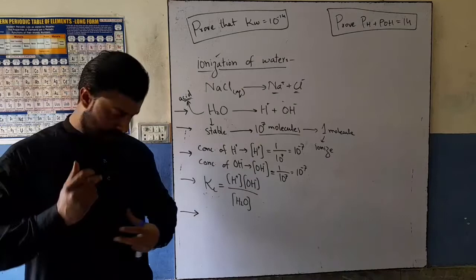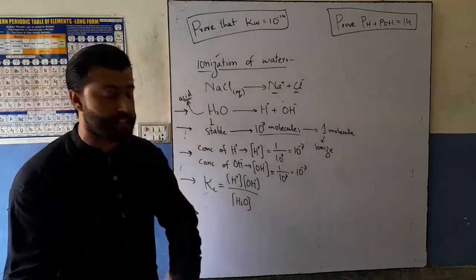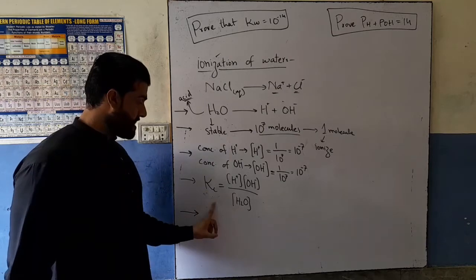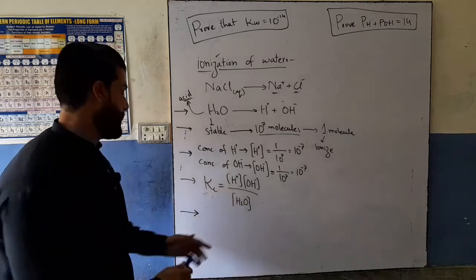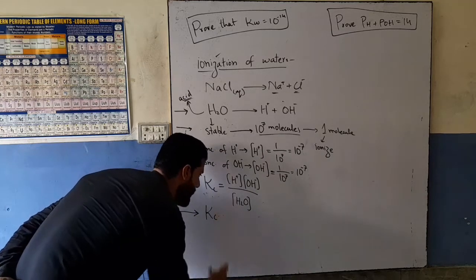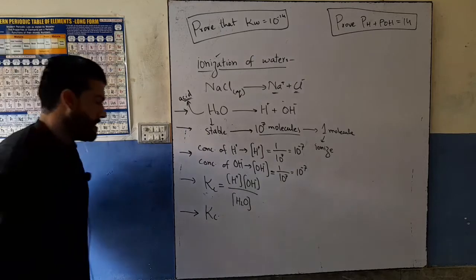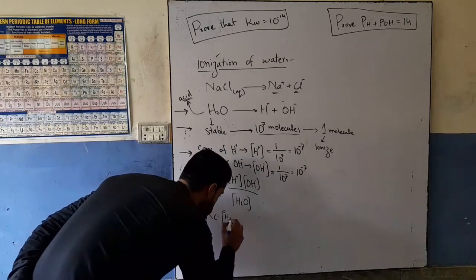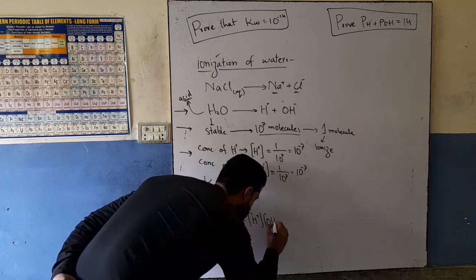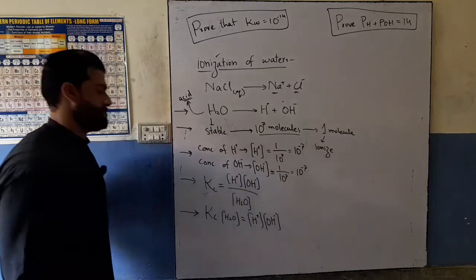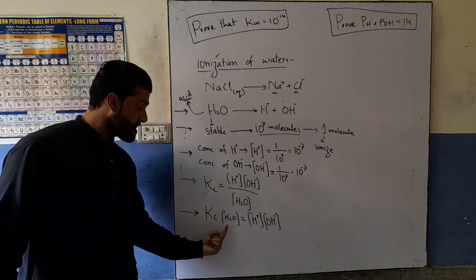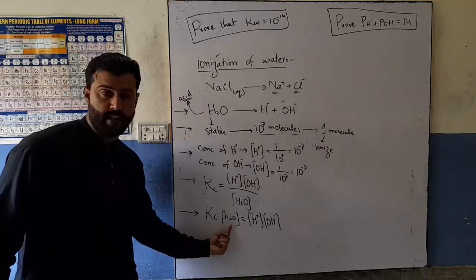The water concentration is constant, so it is moved to the other side with the equilibrium constant Kc. The expression becomes: Kc multiplied by concentration of H2O equals concentration of hydrogen ion times concentration of hydroxyl ion. The equilibrium constant for water is Kw.